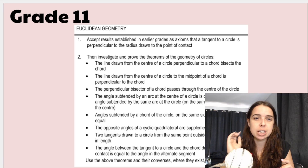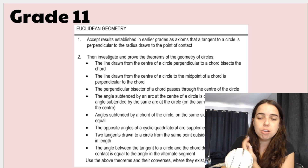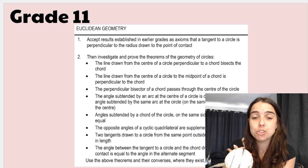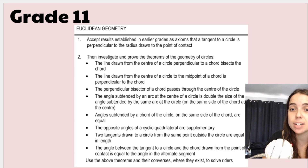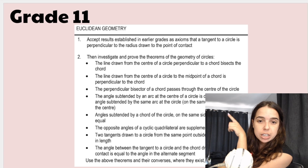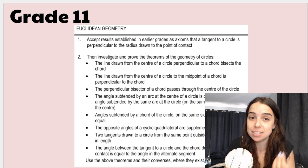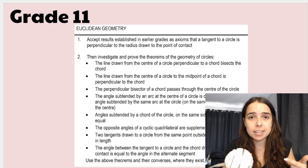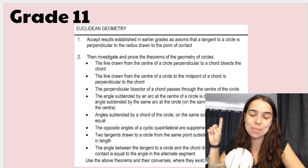For Euclidean geometry in grade 11, what you focus on a lot is circle geometry — investigating and proving the theorems of the geometry of circles, and using these theorems and in some cases their converses to solve different questions. This does look overwhelming, but as your teacher goes through each of these theorems it will become clear. The more you practice, the better you will get at Euclidean geometry. Practice as many past paper questions as you can, and I promise you this section won't be that bad.